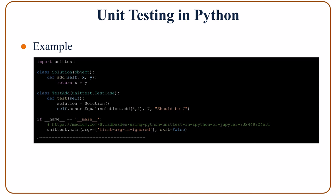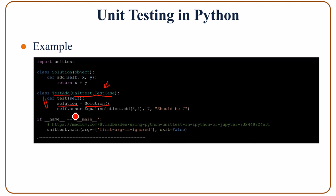Looking at the code example: the first line imports unittest, which is the library for unit testing. Then we have the class Solution with a single method add, which takes two parameters in addition to self and returns their sum. For unit testing, we define the class TestAdd, which inherits from unittest.TestCase — don't forget this. Then we create a test method, and we may have a number of tests. This test first creates an object based on the class Solution.